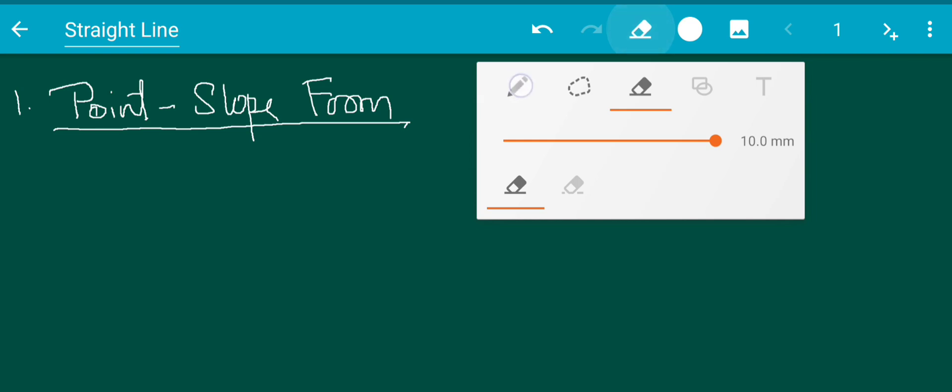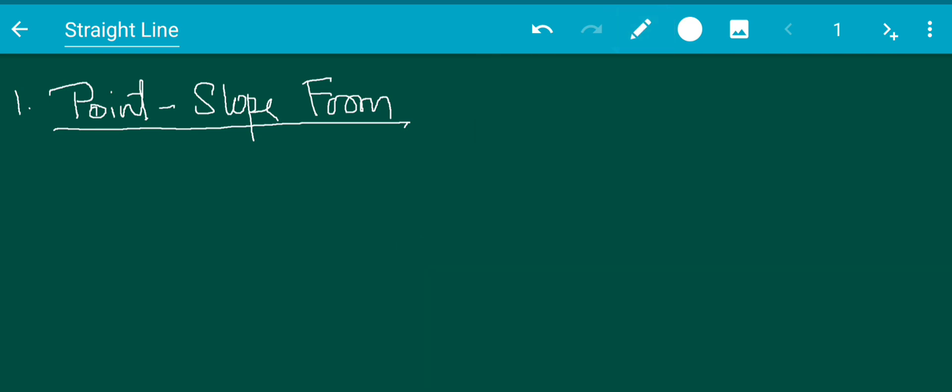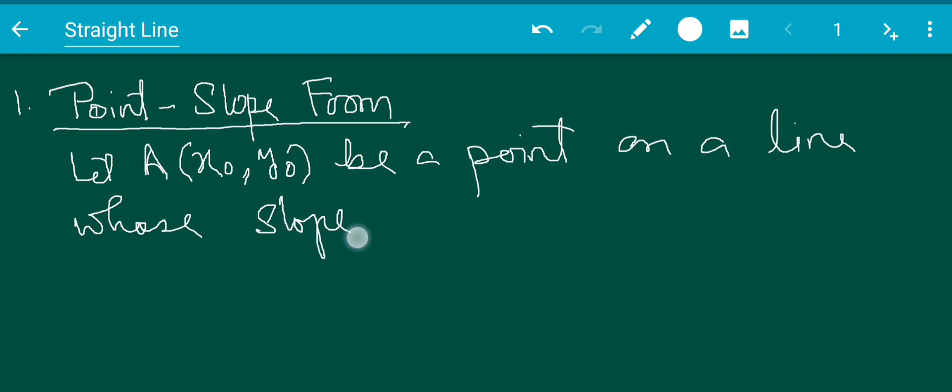So let's see. Suppose (x₀, y₀) is a point on a line whose slope is m.